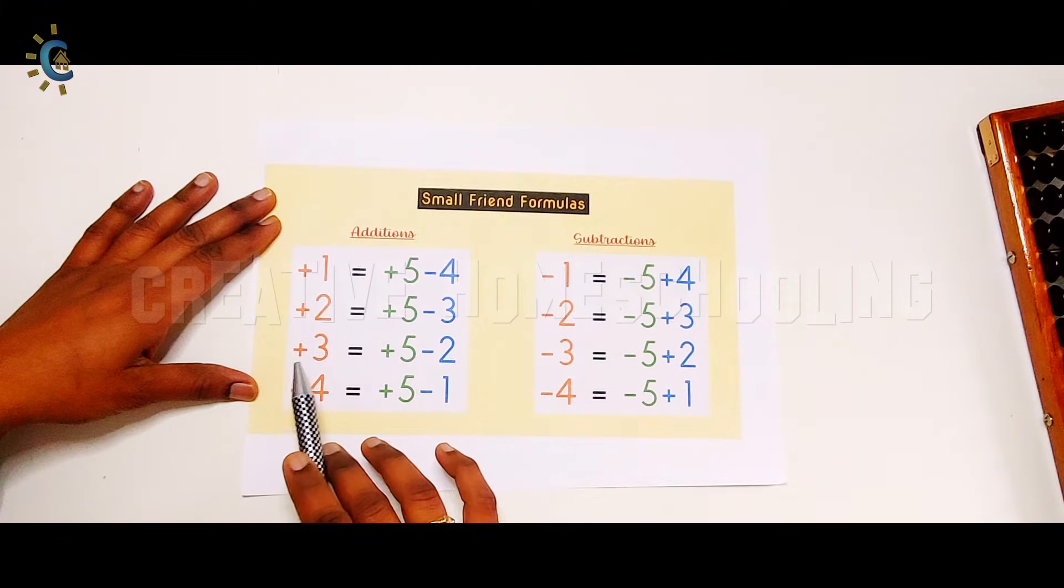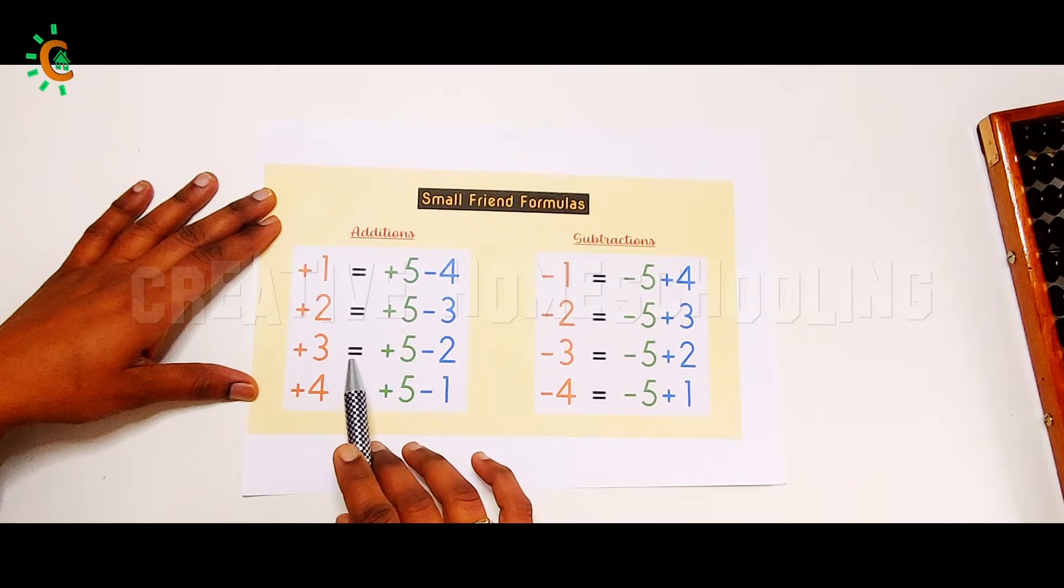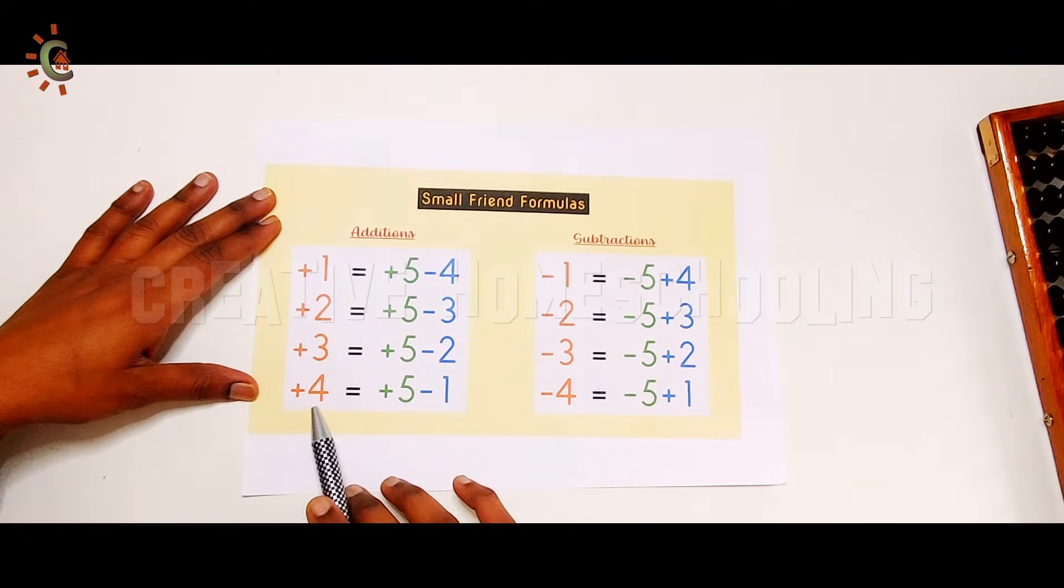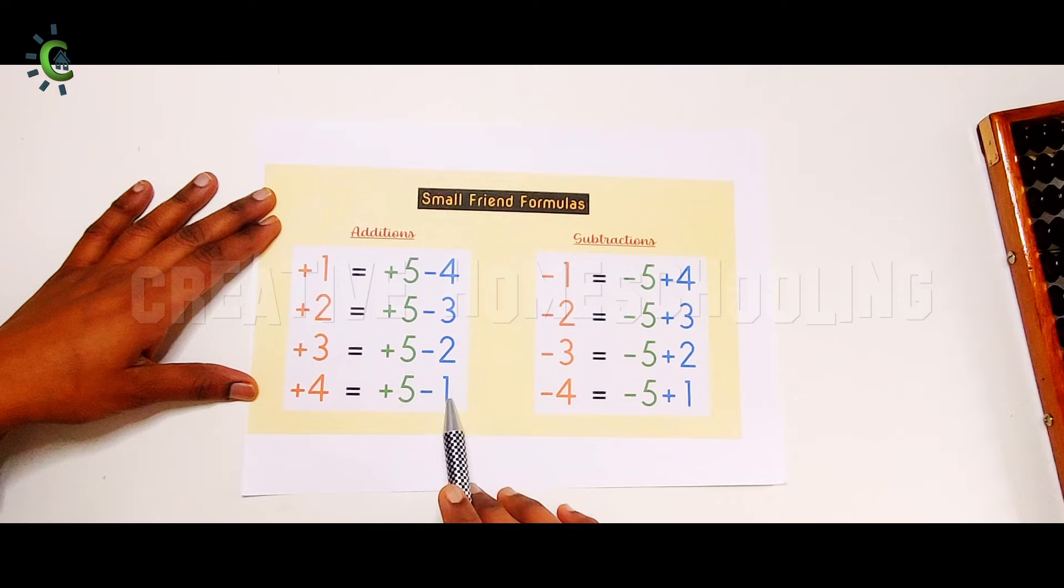If we want to add three beads, we must use the formula plus 3 equals plus 5 minus 2. If we want to add four more beads, we must use the formula plus 4 equals plus 5 minus 1.